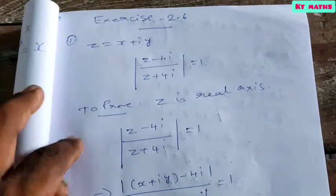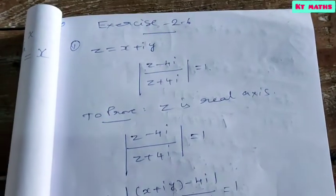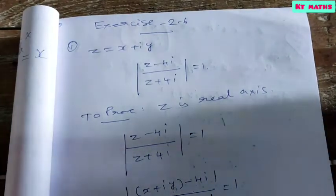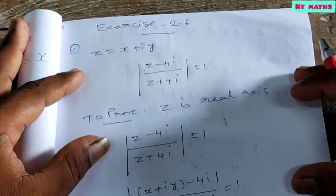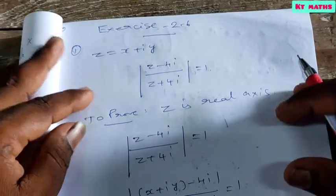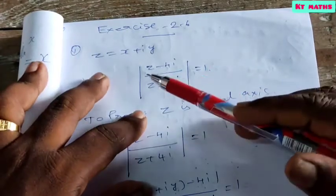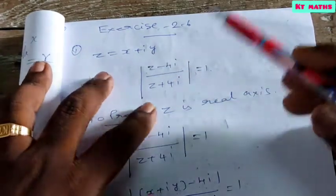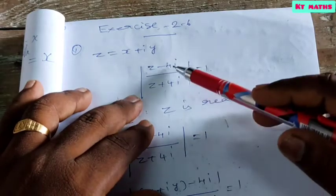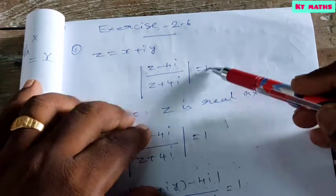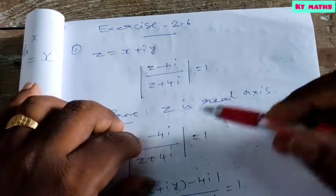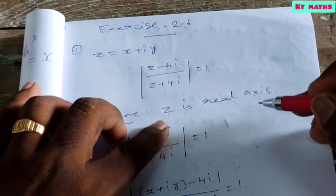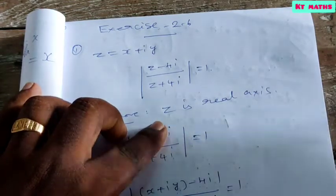Class 12 standard mathematics, chapter 2, complex numbers, Exercise 2.6, sum number 1. Given that z equals x plus iy is a complex number such that the modulus of (z minus 4i) by (z plus 4i) equals 1, show that z is on the real axis.